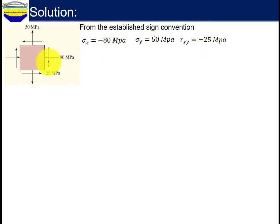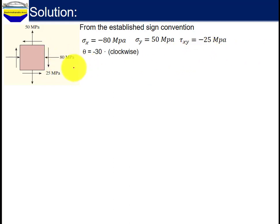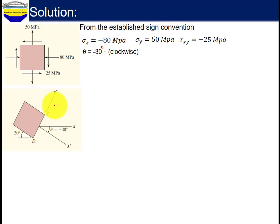The state of stress on the right-hand face is downward, giving negative 25 MPa. The additional stress value is negative 30 MPa.